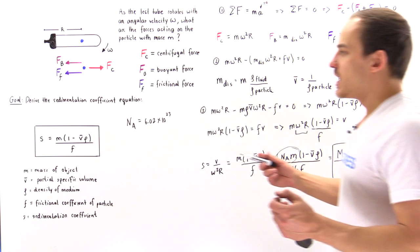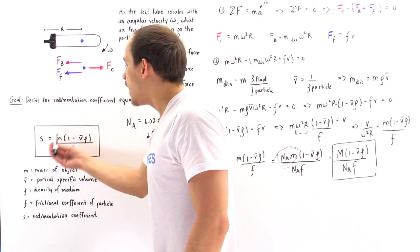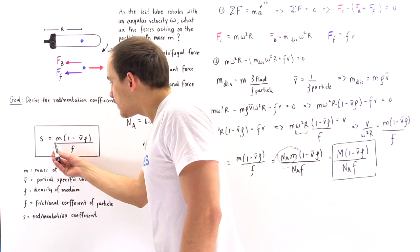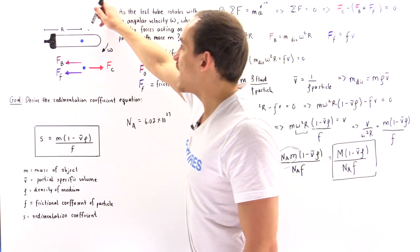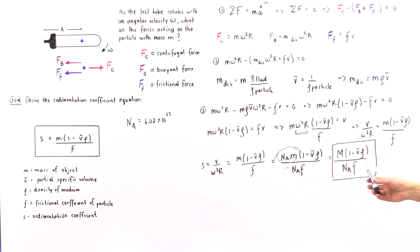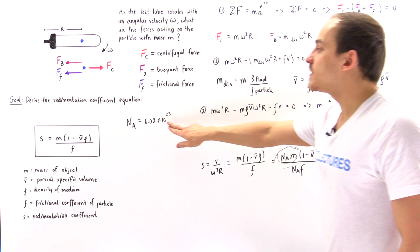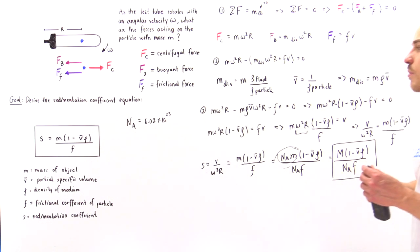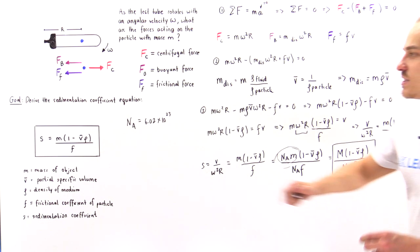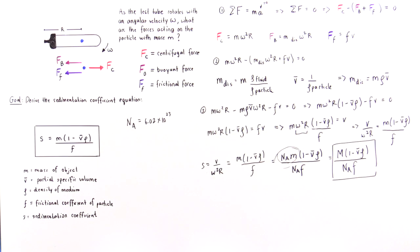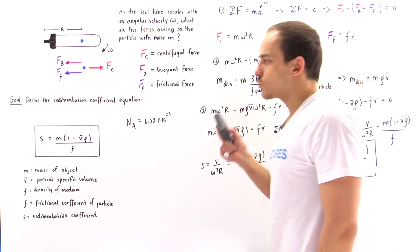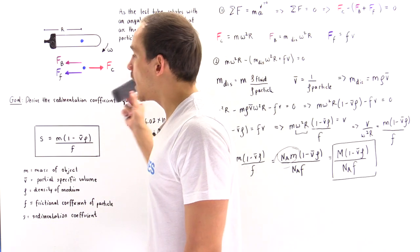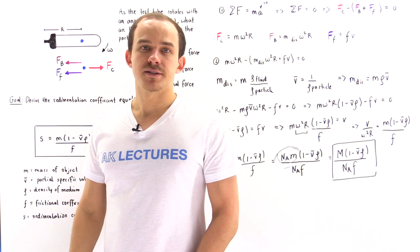These two equations are equivalent. In the first form, lowercase m is the mass of a single particle; in the second form, uppercase M is the molar mass — the mass of Avogadro's number (6.02 × 10²³) of particles. This is how you derive this equation from basic physics.